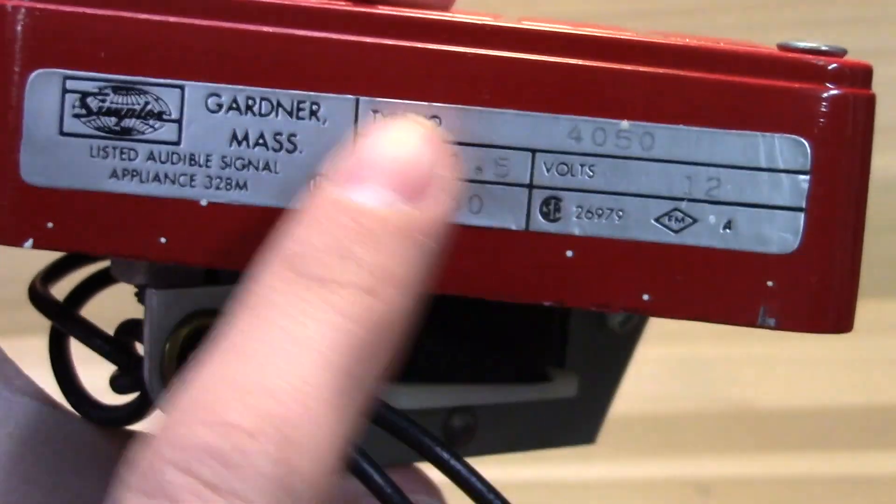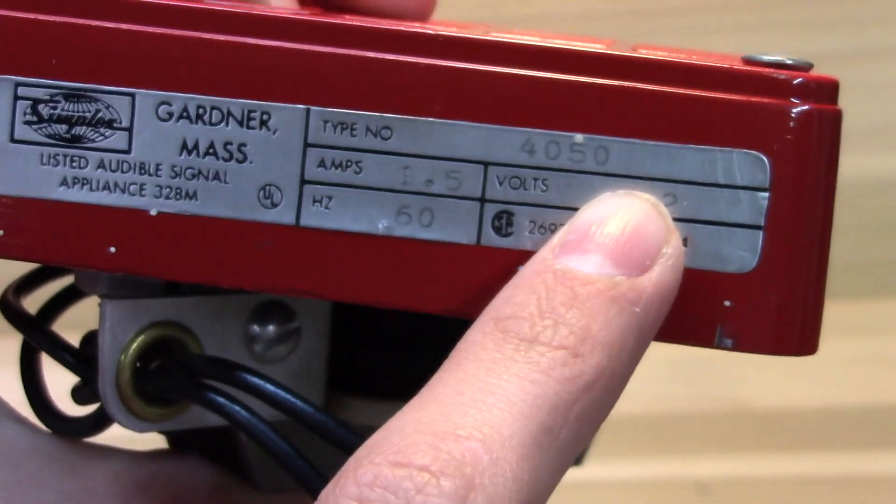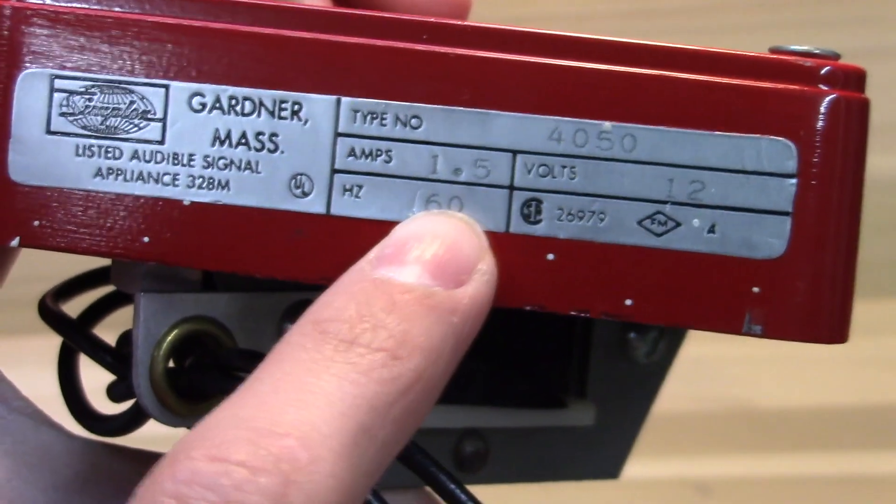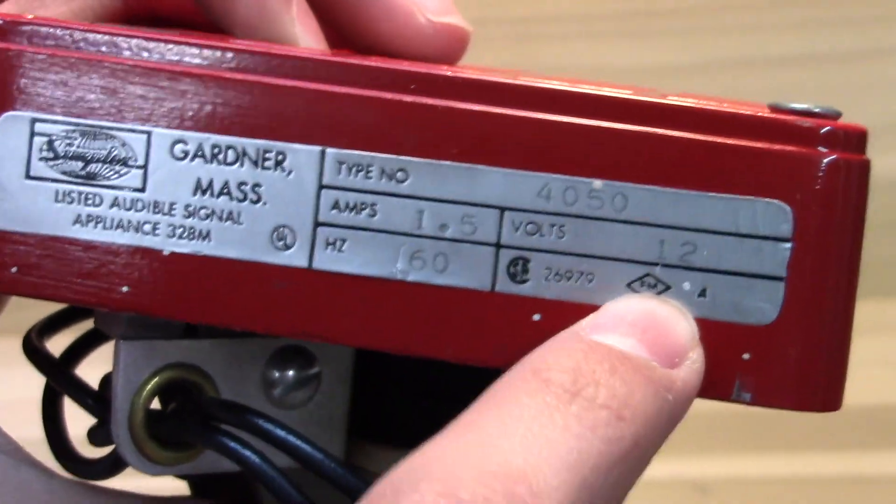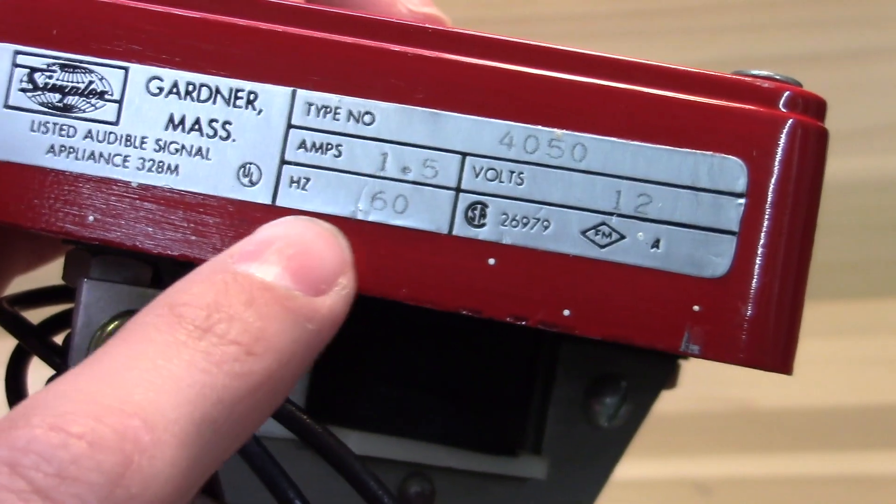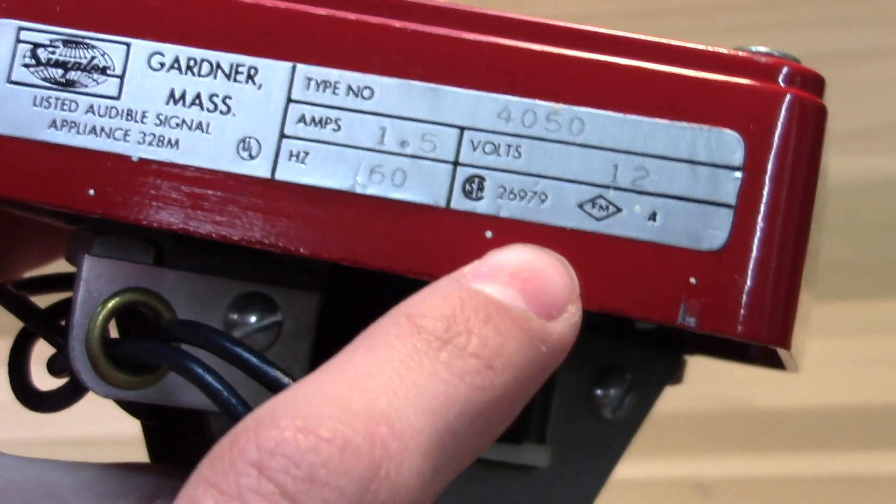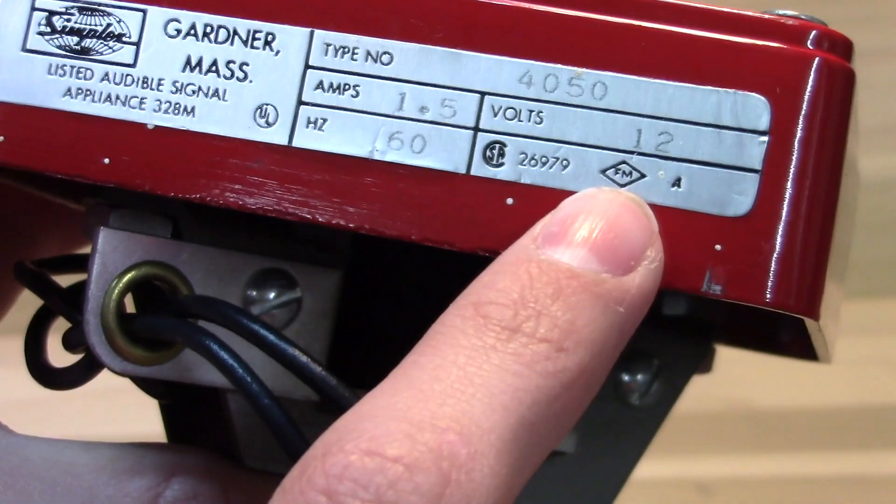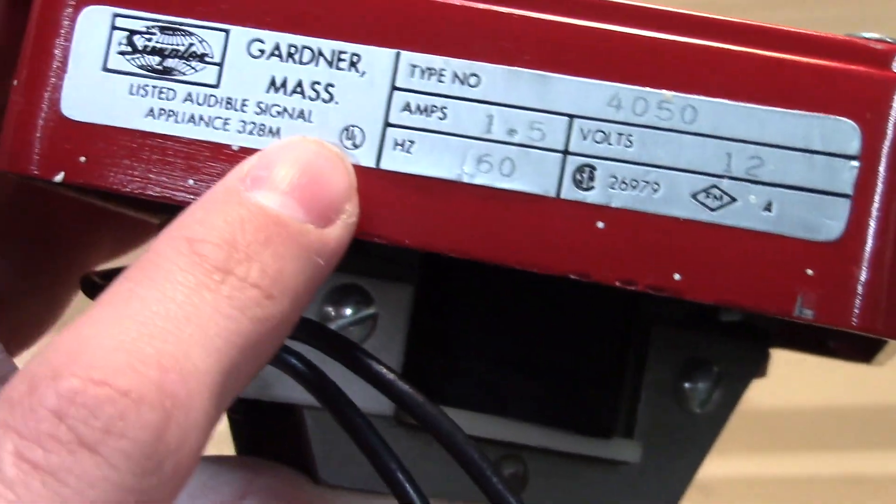Looking at the label here, we see it's a 4050 model. It takes 1.5 amps, 12 volts not 24, 60 hertz, and it's FM approved, UL listed audible signal.